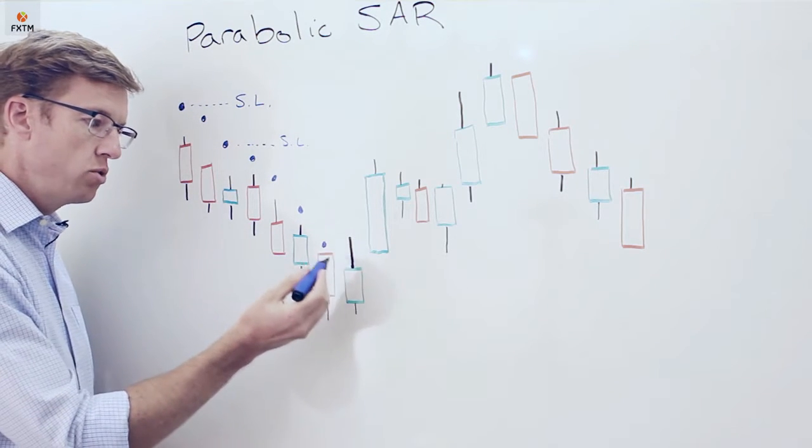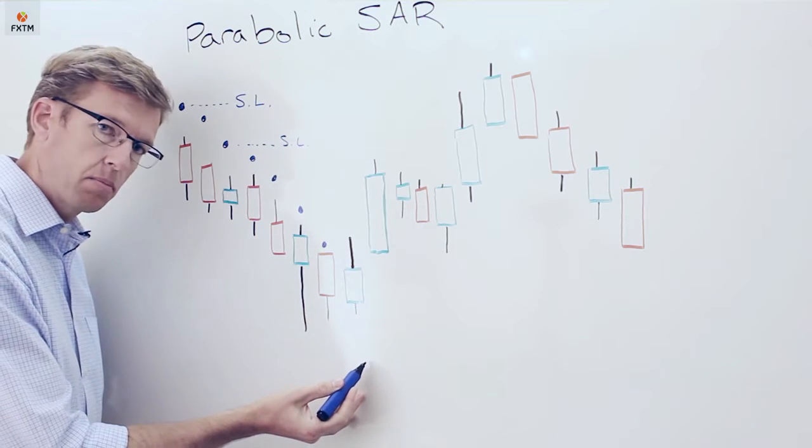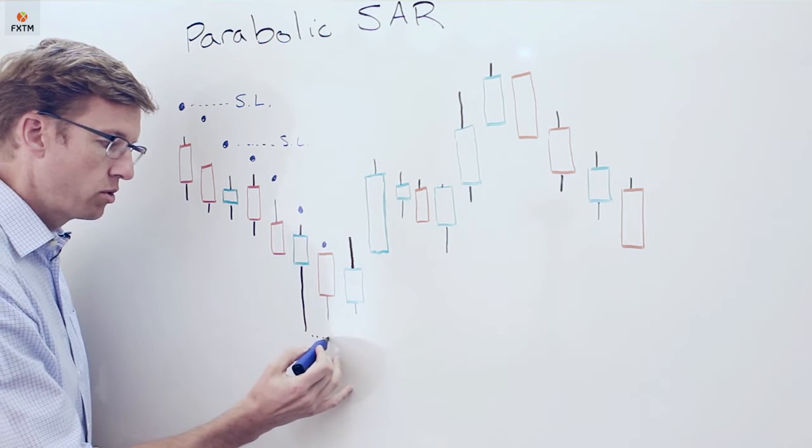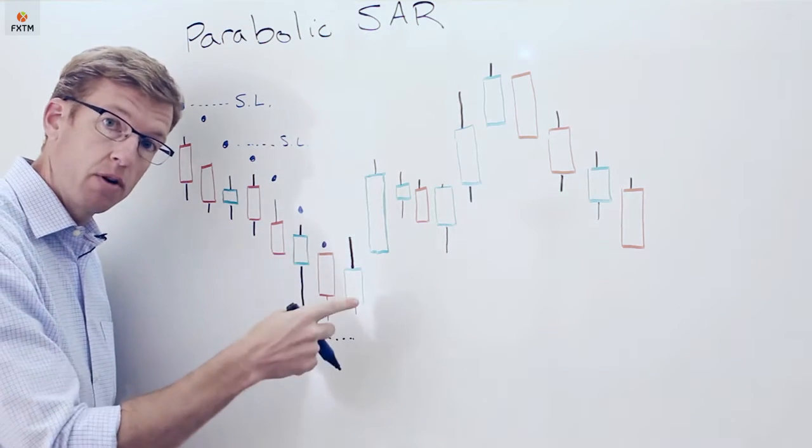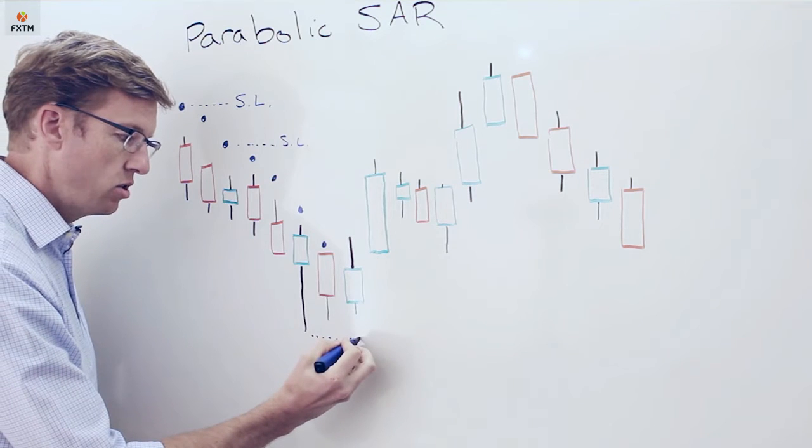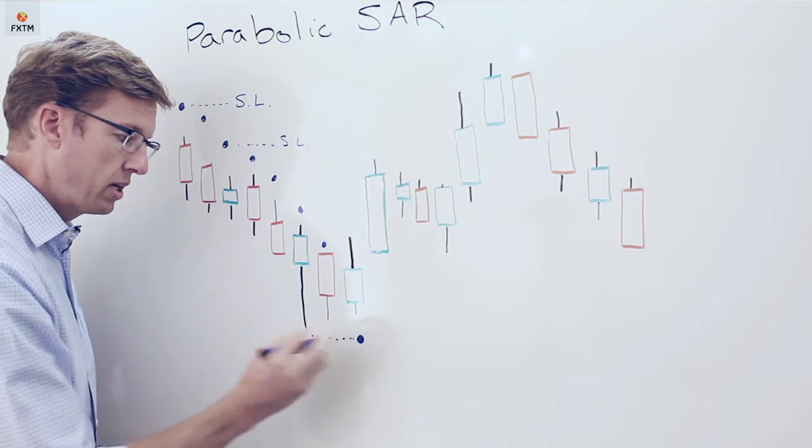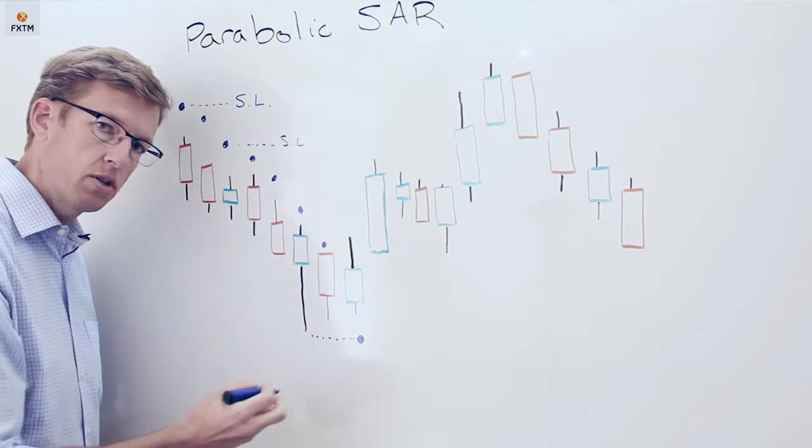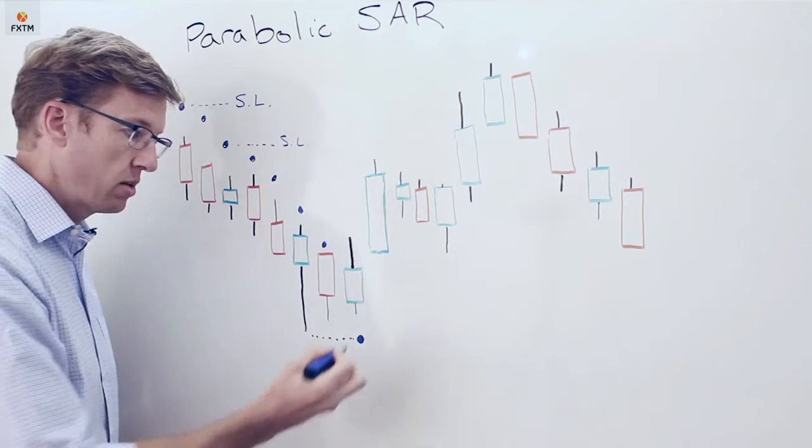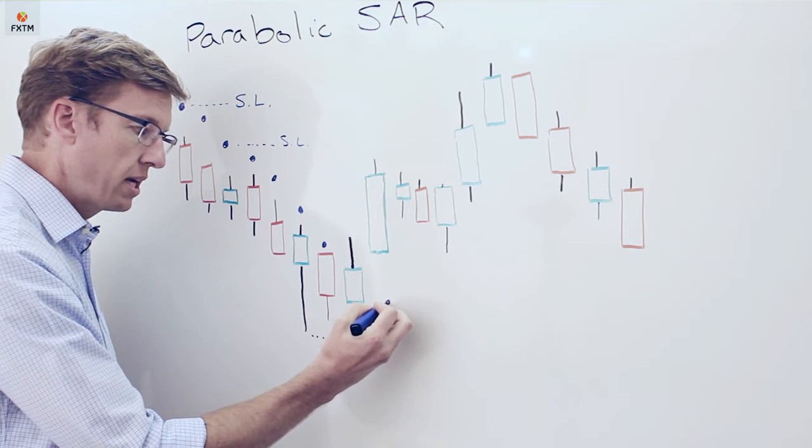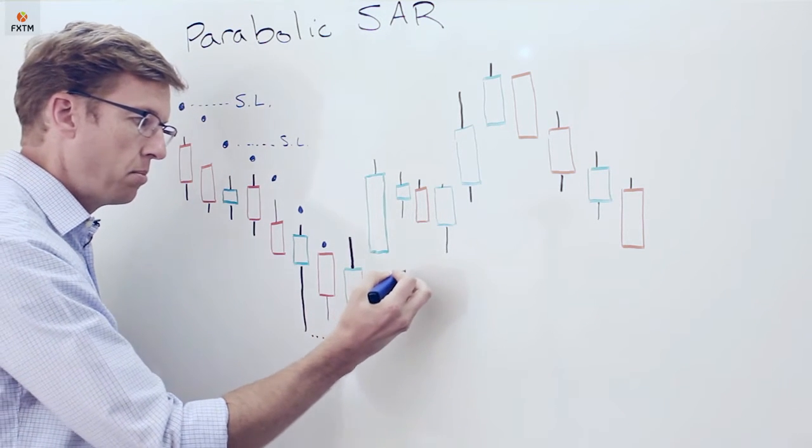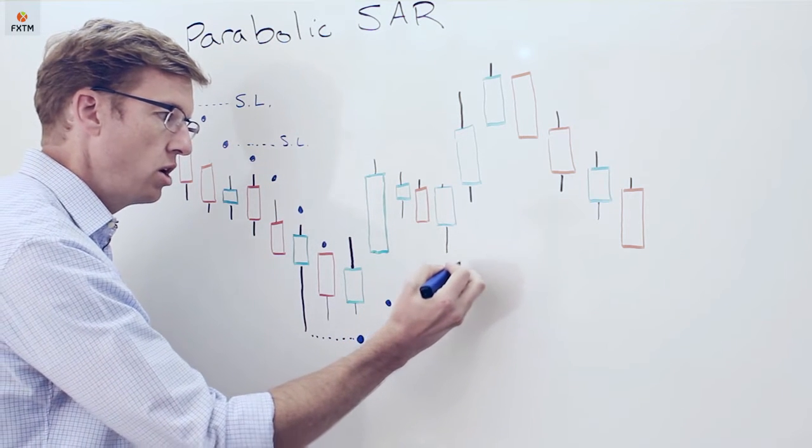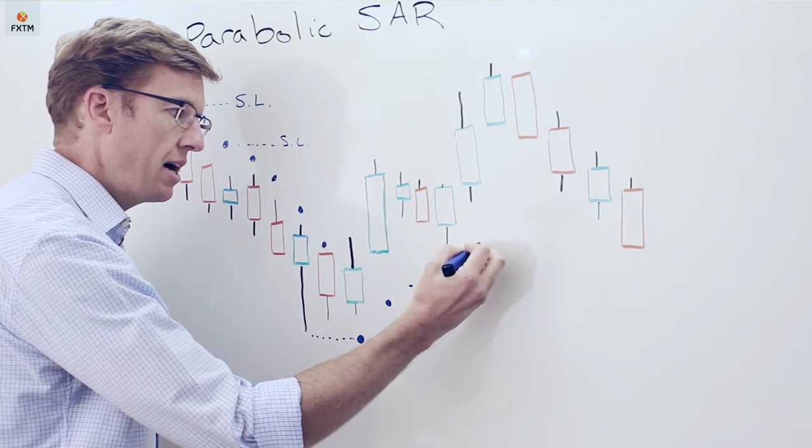Where would that new dot be if it's going to be applied underneath the price chart? It's set initially equal to the lowest price prior to that reversal. In this case, that new dot would be set at a point equal to this low shadow here on this day, a couple of days before the actual reversal. As that bullish trend progresses, that little dot is going to be placed underneath each new bar and start to accelerate closer and closer to the prices.